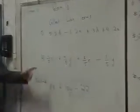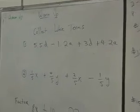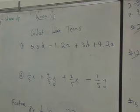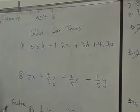So the first question, 5.5D minus 1.2A plus 3D plus 4.2A, what do you do? Remember I gave you the example about organizing your socks go with your socks, and your shirts go with your shirts, remember that example? Yes, Jonathan? You circle and pair them up. Pair them up, right.